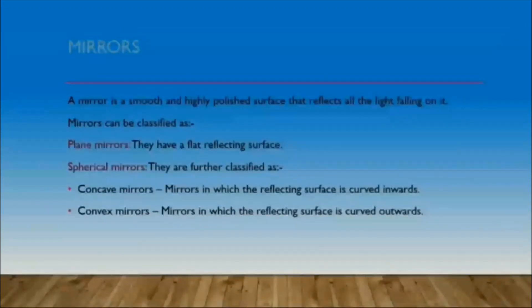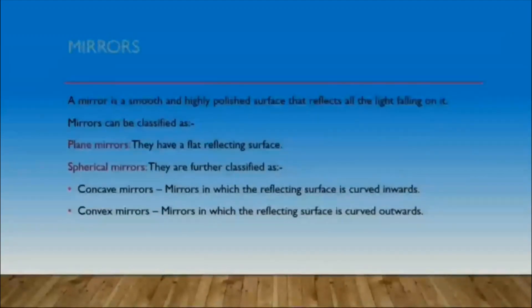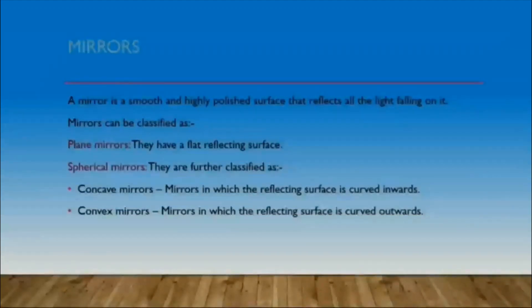In this chapter, we are also going to study about mirrors. A mirror is a smooth and highly polished surface that reflects all the light falling on it. The smooth surface can be flat or a little curved. On this basis, we can classify mirrors as plain and spherical.